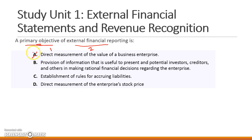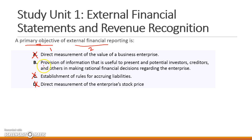Option C — establishment of rules for accruing liabilities — this is also not the primary objective. It can be considered one of the mechanisms of external financial reporting, but it is not the primary objective. Option D — direct measurement of enterprise stock prices — this is also incorrect.